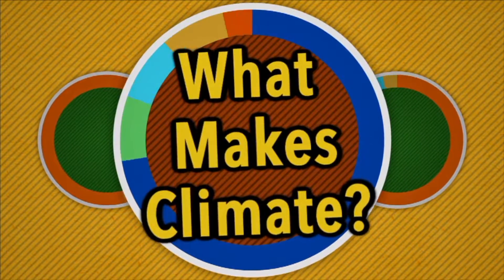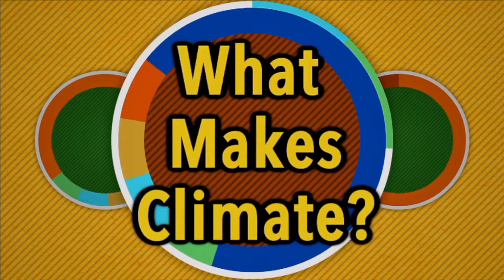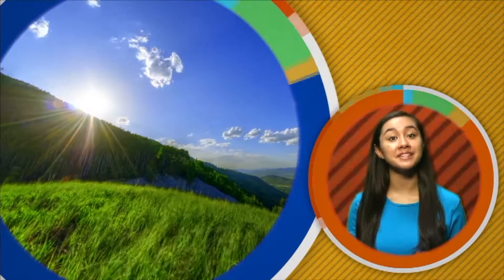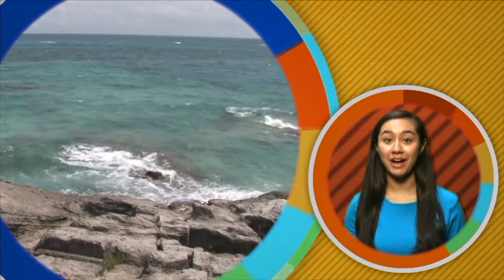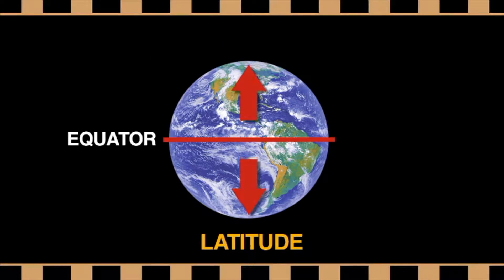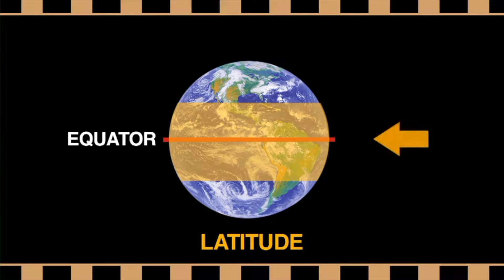So what makes a climate? There are several factors. The climate of any location is affected by its latitude, terrain, and altitude, as well as nearby water bodies. Latitude is the distance north or south from the equator. Places closest to the equator have a warmer climate than places further away.